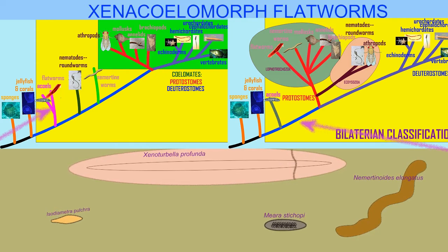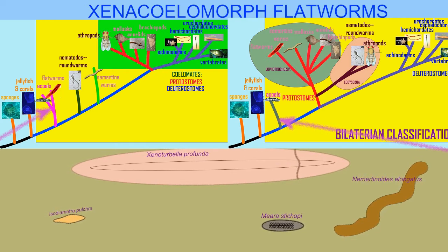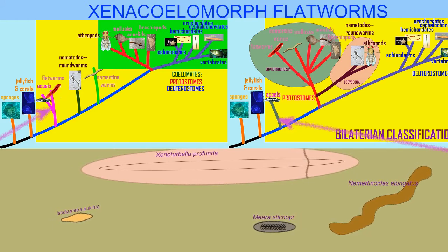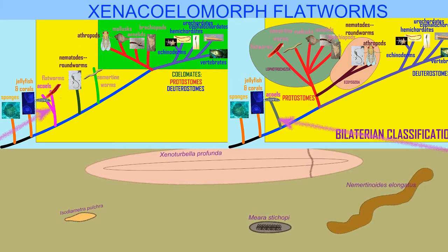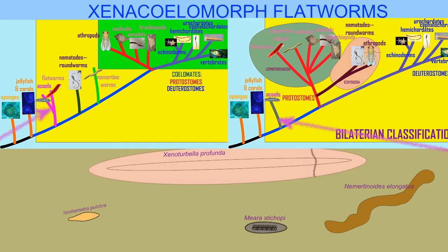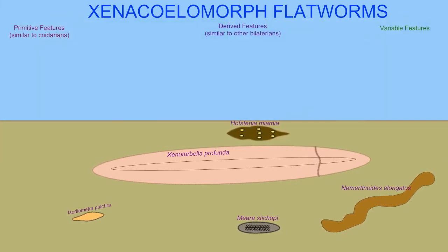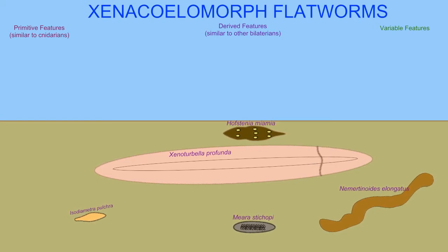...these xenoselomorph flatworms, as the only confirmed basal branch of bilaterians. Their study is therefore important in understanding what ancestral bilaterians were like. These flatworms vary, but they have a number of traits which justify their position here.